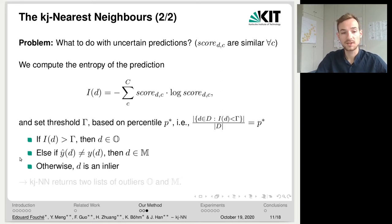Otherwise, if the predicted class is different than the original class, then it is likely that d was misclassified. So we say that d is a type M outlier. Otherwise, we identify d as an inlier. And so in the end, the kj nearest neighbor returns two lists of outliers O and M.